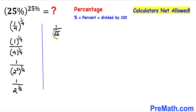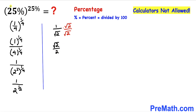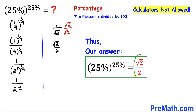Since we are not supposed to have a radical in the denominator, we are going to rationalize by multiplying and dividing by √2. At the denominator, √2 times √2 gives us simply 2. So this expression becomes √2 on the top divided by 2 at the denominator. Thus our given exponential problem has been simplified to √2 divided by 2, and that's our final answer.